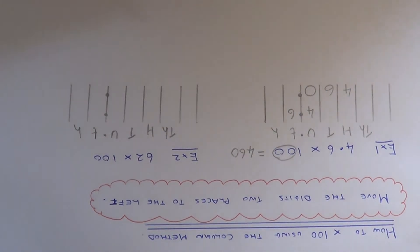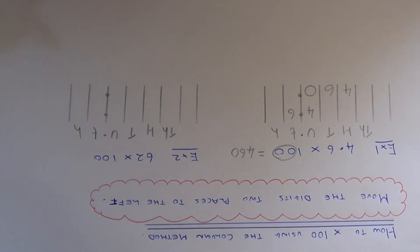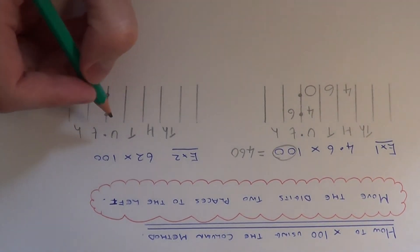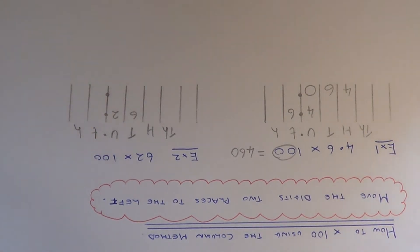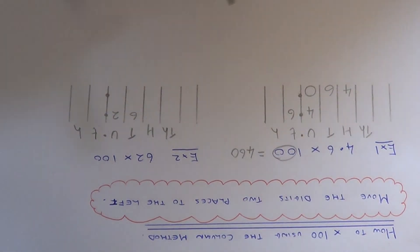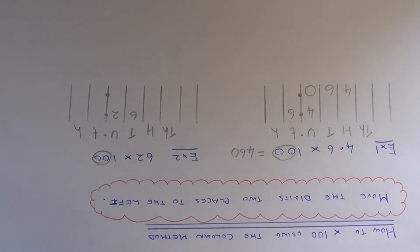Let's have a look at example two. This time we've got 62 times 100. Again, just put 62 into the correct columns: we've got 2 units and 6 tens. Again, we just need to move the digits two places to the left as we're multiplying by 100.